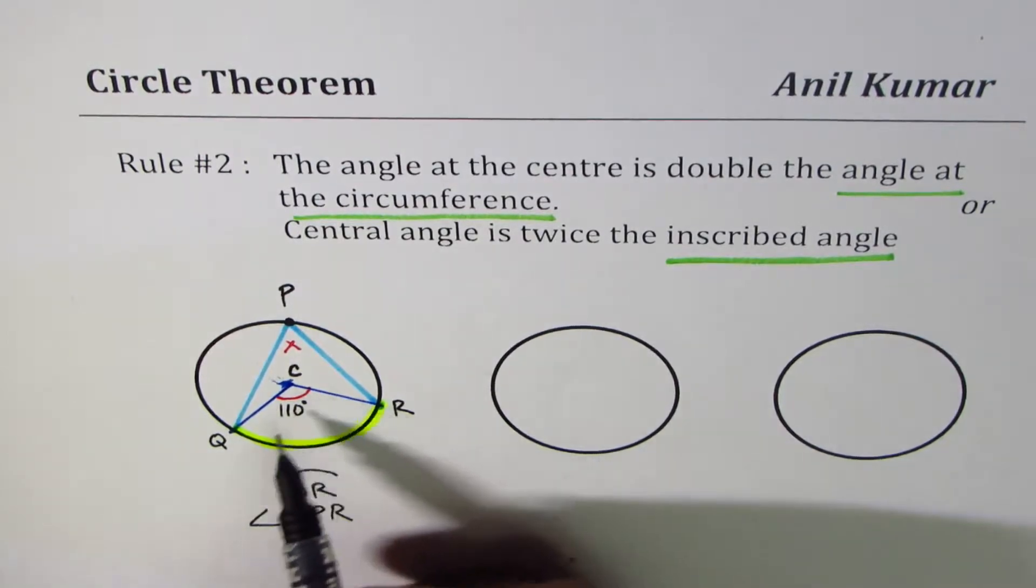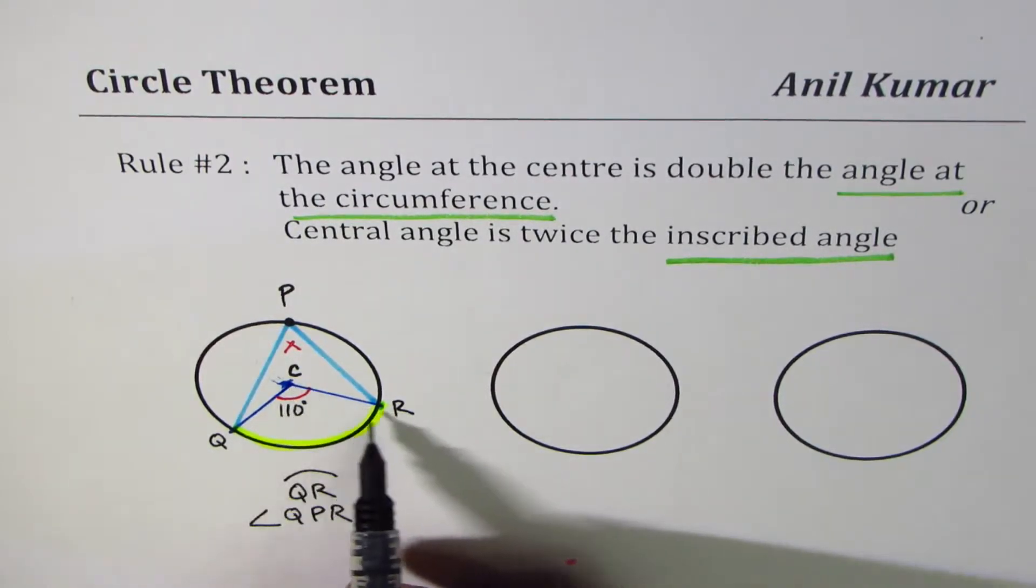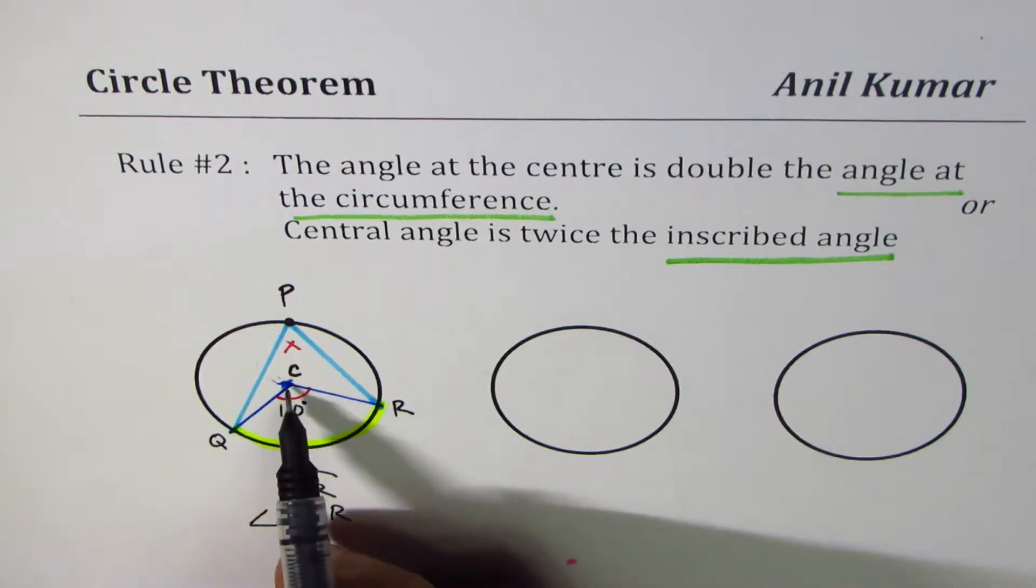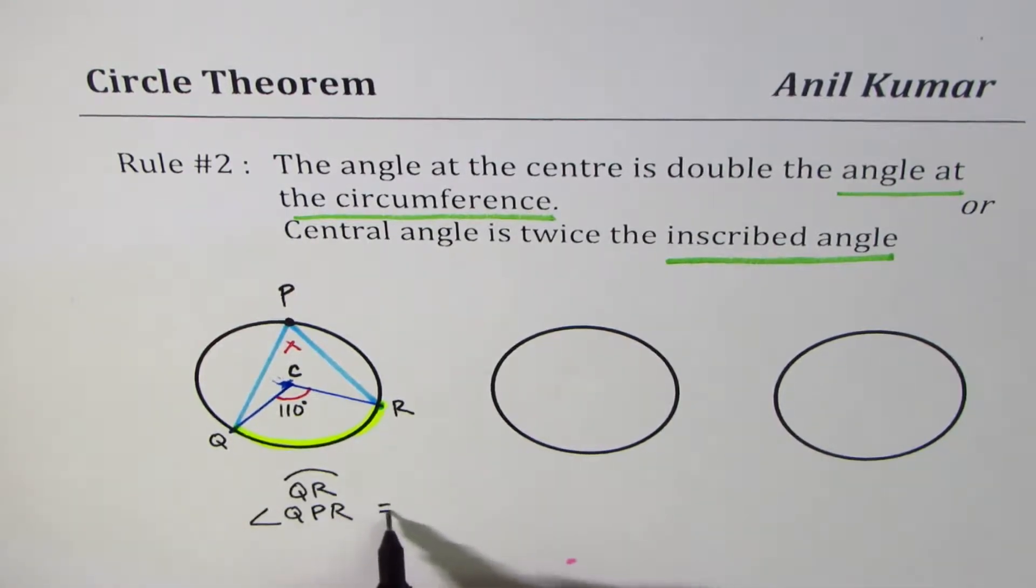The central angle is angle QCR. What the arc QR makes at the center is QCR, right?